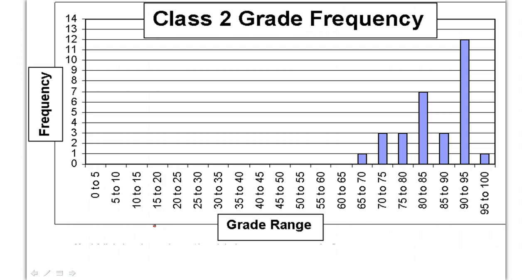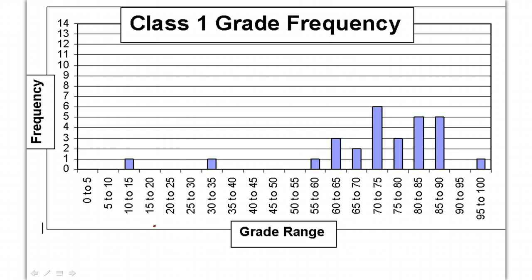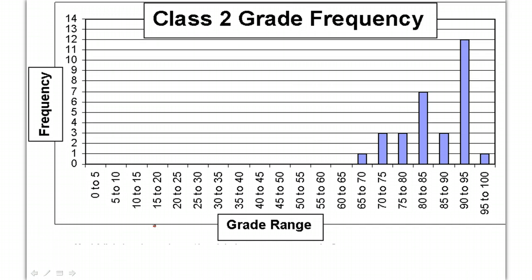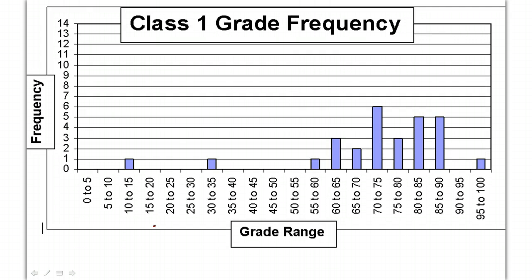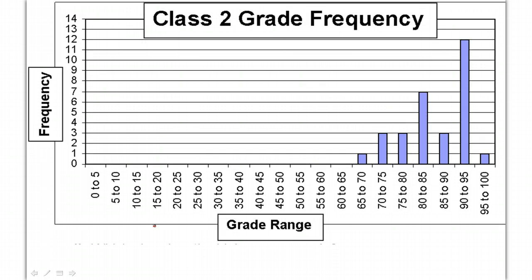When you look at a frequency chart, you should be able to easily recognize which group has a higher mean and which group has a higher standard deviation. Depending on whether you're talking about the mean or the standard deviation, you're looking at two different characteristics of the graph. What do you look for when we're talking about mean, and what do we look for when we're talking about standard deviation?